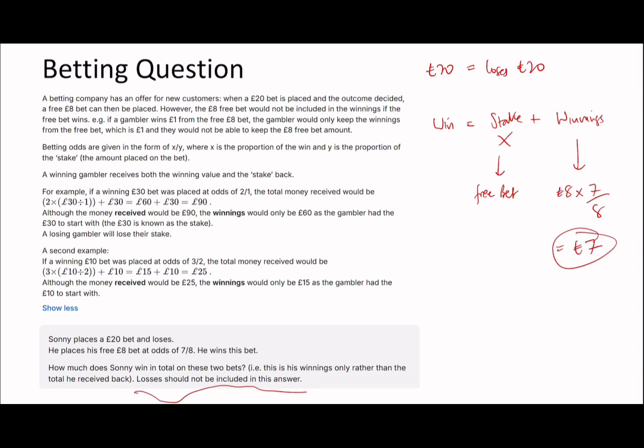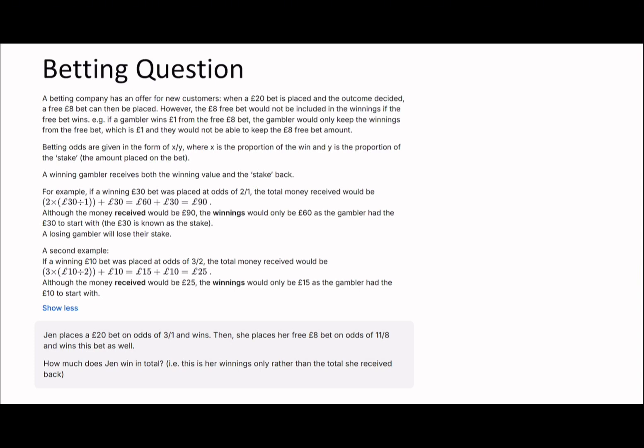The losses should not be included in the answer, so it's just going to be £7. On to the next one, so hopefully you guys have got the idea behind this by now. Jen placed a £20 bet at odds of 3/1 and wins. She plays a free £8 bet and wins as well. How much does she win in total? This is winnings only rather than in total. The first win is going to be £20 because that's the stake. Remember it's stake plus winnings, so that's £20 plus 3/1 times 20, which is 20 plus £60.